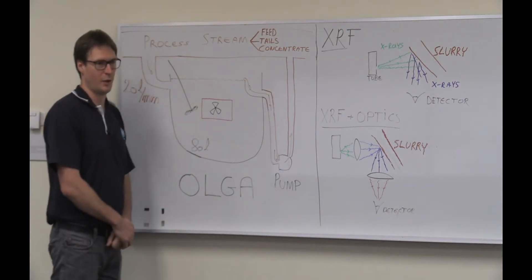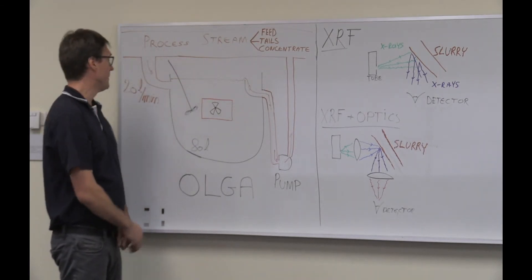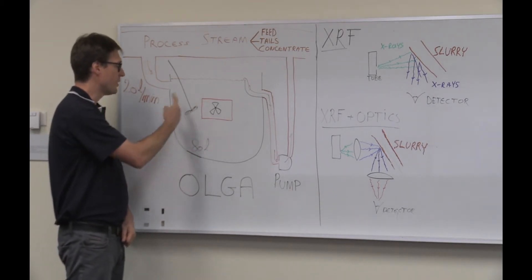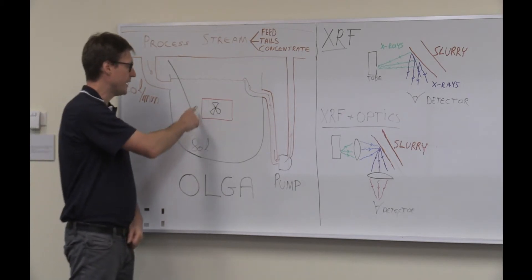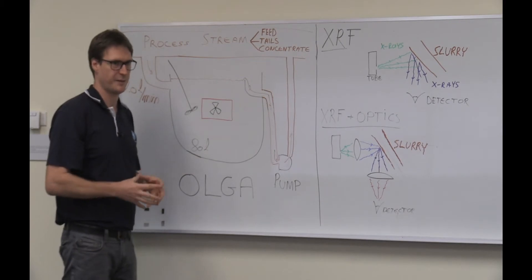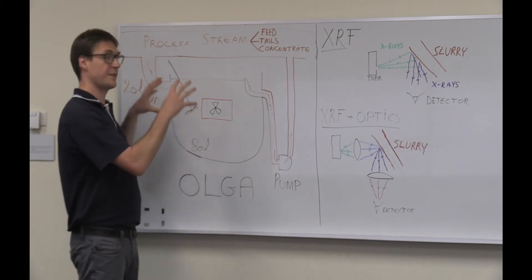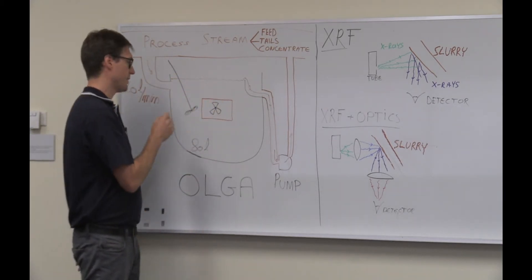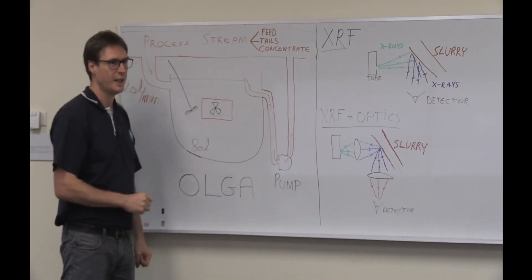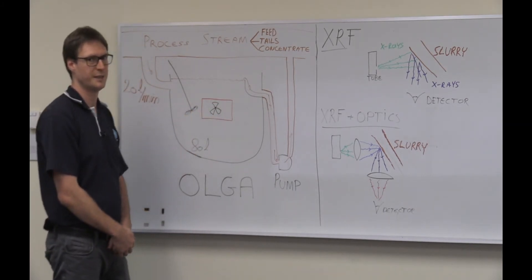This here is a drawing of OLGA in a plant. So we have a main process stream, which could be a feed, tail, or a concentrate, and we sample it at 20 liters per minute to fill an 80 liter tank. We have a stirrer to keep the slurry in suspension, and in the middle of the tank we have mounted an X-ray window, which is a piece of plastic that's very transparent for X-rays, but also very radiation hard, meaning that it won't get damaged by the X-rays. All the X-ray equipment is mounted in front of this window, so that it's easy for the X-rays generated to generate X-rays that make it into the slurry, and also that it's easy for characteristic X-rays to leave the slurry through the window to be detected by the detectors.